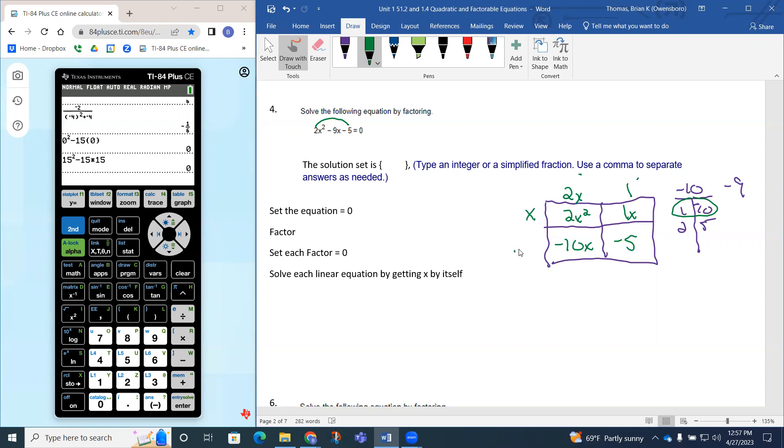What times 2x is negative 10x? That would have to be negative 5. Negative 5 times 2x is negative 10x, and does negative 5 times 1 give you negative 5? It does. So our factorization is going to be these two terms on the outside.